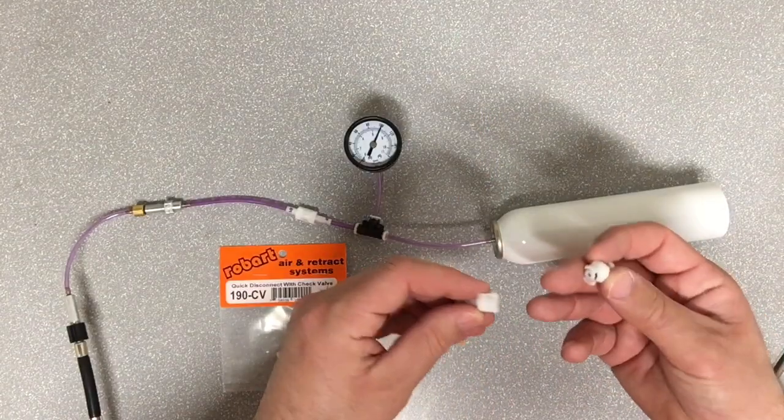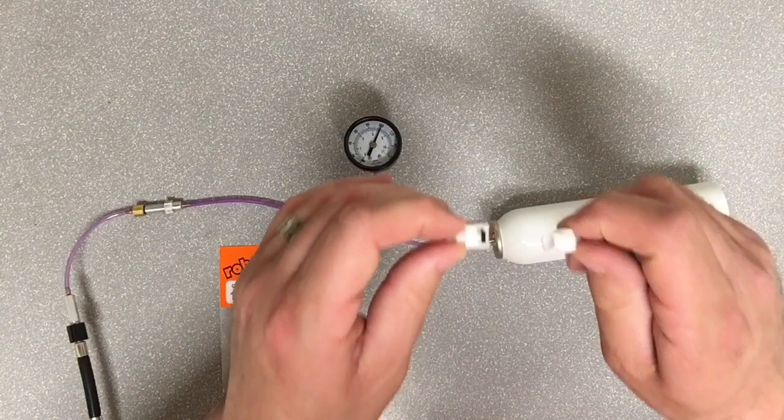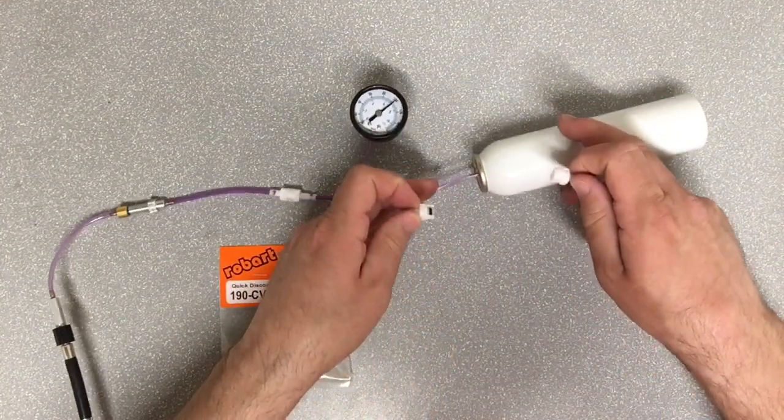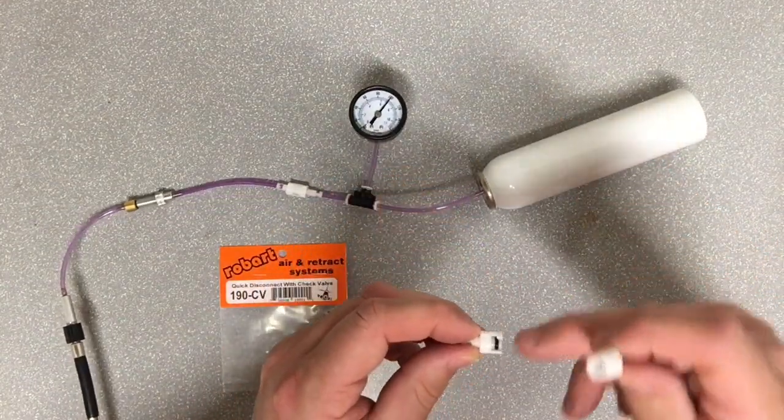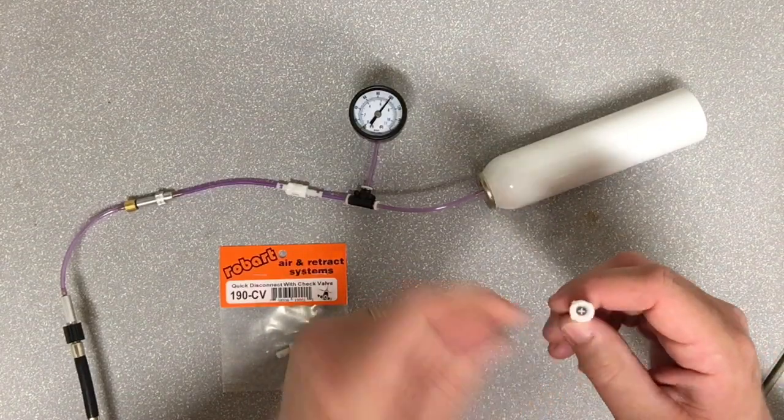Taking one out here. An easy way to know which side is the check: it's the part that does not have the black rubber o-ring. This side has the check valve in it.